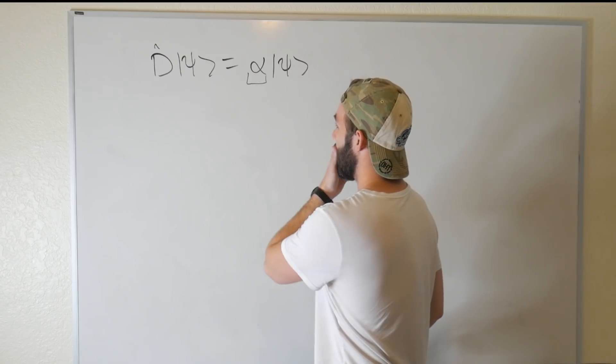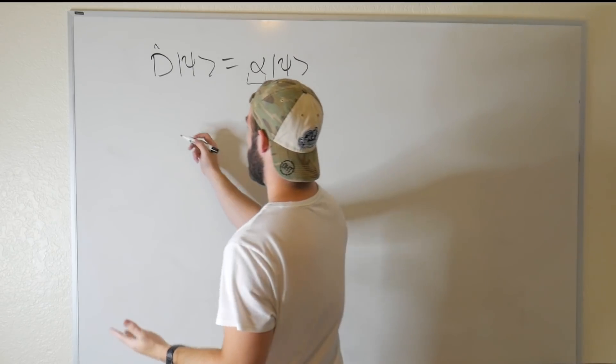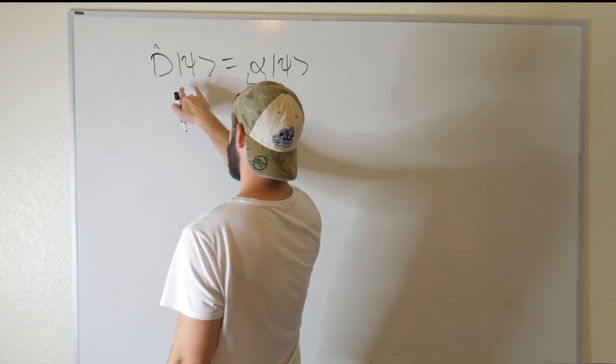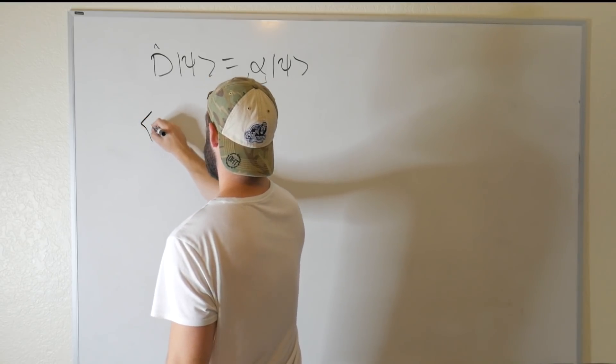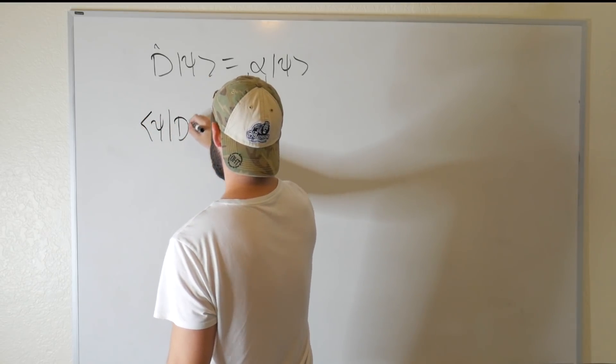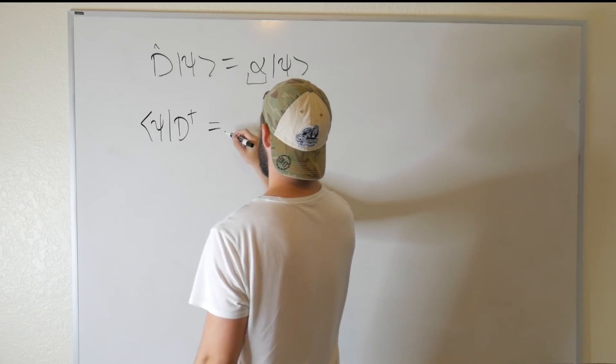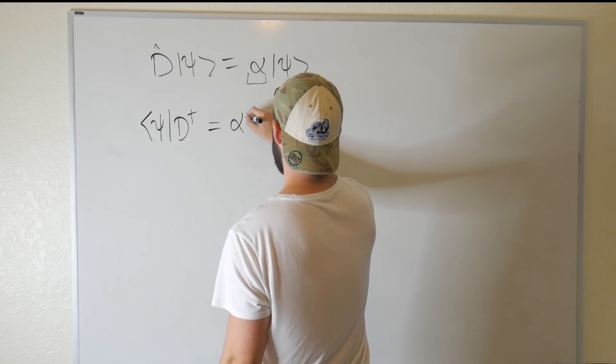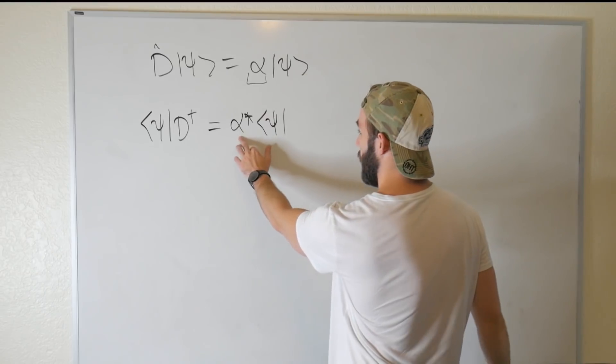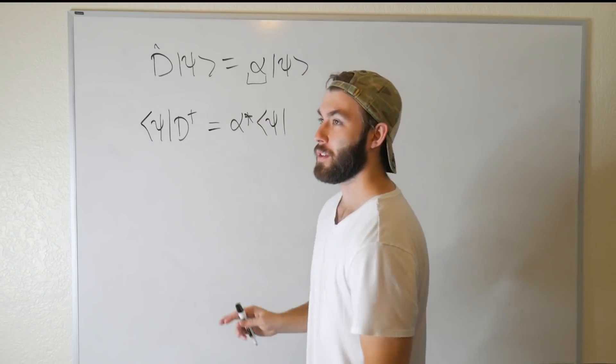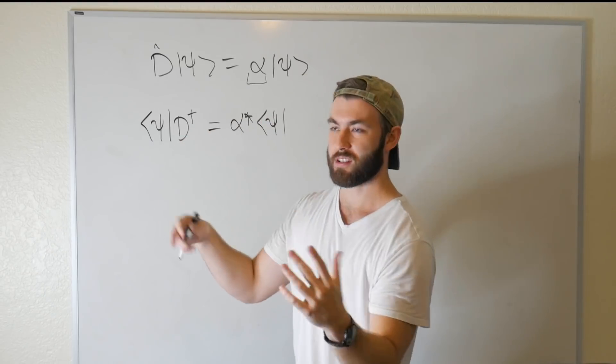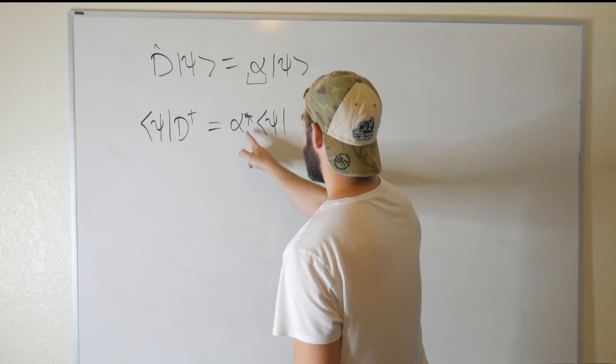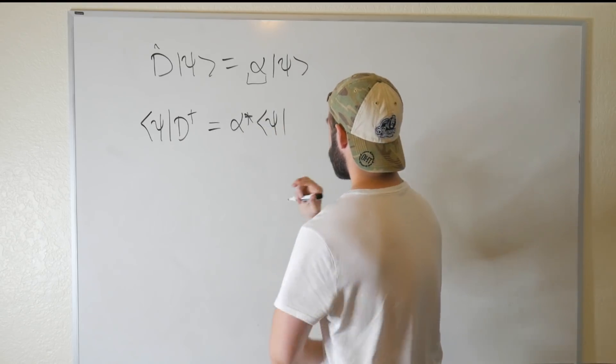So let's go ahead and take the Hermitian conjugate of both sides. If we do that, then this ket becomes a bra. So we get ⟨ψ|D† = α*⟨ψ|. This is just a number. So the Hermitian conjugate of a number, well, its transpose is just going to be itself. So all that's left over is the complex conjugate.